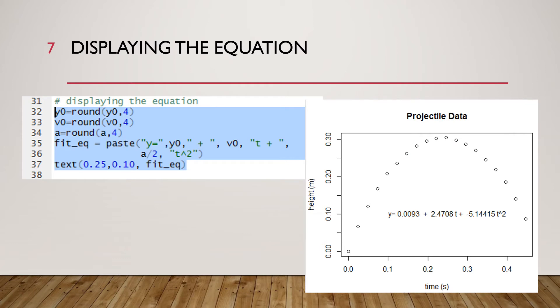Next we're going to display the equation on the plot. So in lines 32, 33, and 34 we are rounding our parameters to four decimal places so that the expression is not too long. In line 35 and 36 we are putting together our equation so we are saying y equals, we want that to be exactly as is so that's in quotes, and then next we want the initial position parameter so that was y0 and then next we want an explicit plus so that's in quotes with spaces around both sides.